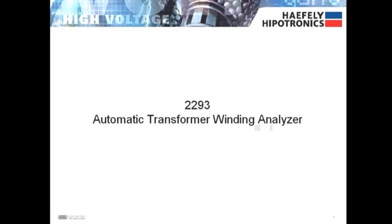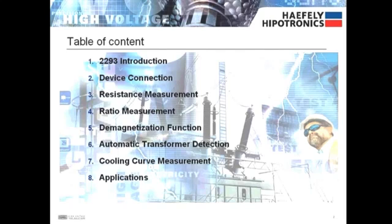In this presentation I'll be discussing our 2293 automatic transformer winding analyzer, including its features and benefits and two new optional test modes we now offer. I'll cover a brief introduction, the device connection, and its five measurement functions including winding resistance, turns ratio, demagnetization, automatic transformer detection, and cooling curve or heat run measurement. Finally, I'll cover who can use the 2293.